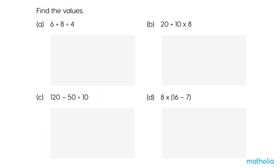Find the values. A: 6 plus 8 divided by 4. Divide first. 8 divided by 4 equals 2. 6 plus 2 equals 8. So 6 plus 8 divided by 4 equals 8.